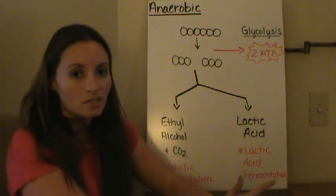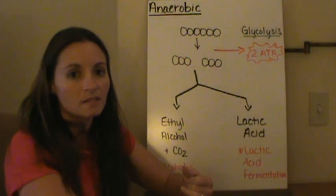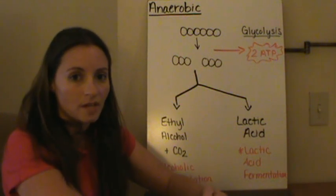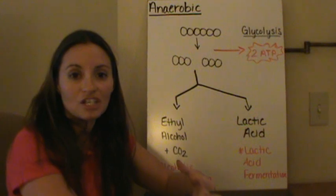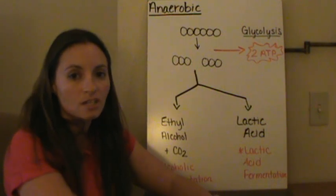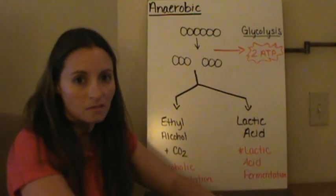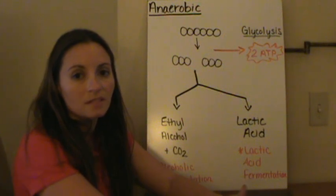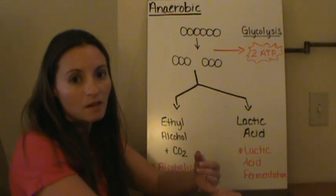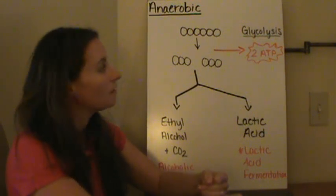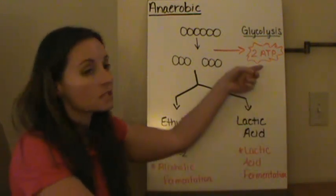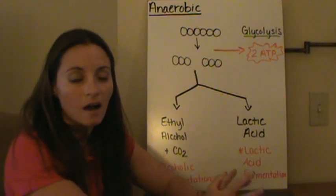To recap: cellular respiration happens in pretty much every organism. It happens in the mitochondria of eukaryotes to release energy from food molecules so we can use it. Usable energy is produced through ATP molecules, which release energy when ATP becomes ADP. Aerobic respiration happens with oxygen and produces a total of 36 ATP. Anaerobic respiration happens without oxygen and only produces two ATP molecules for the organism.